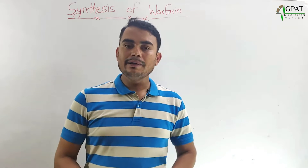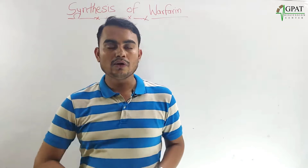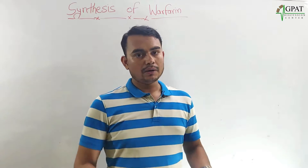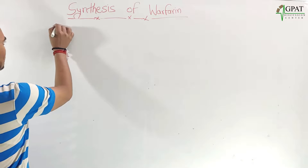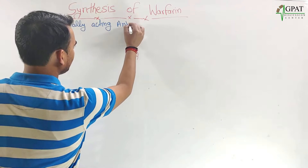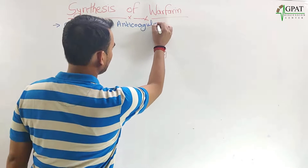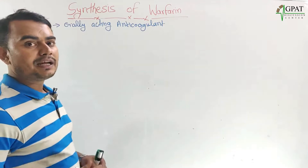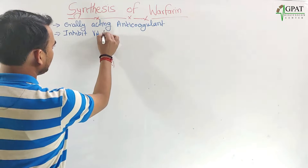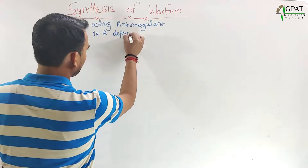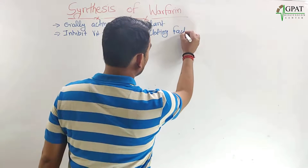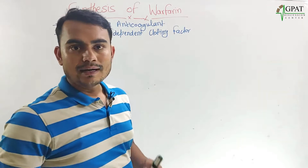Mainly warfarin inhibits the vitamin K dependent coagulating factors like 7, 9, and 10. Warfarin is a coumarin derivative compound. Let us note down these points: warfarin is an orally acting anticoagulant that mainly inhibits vitamin K dependent clotting factors 7, 9, and 10.